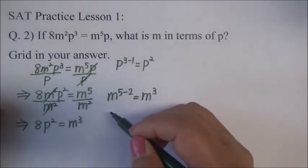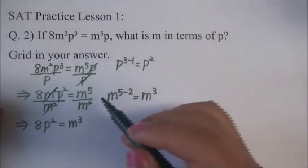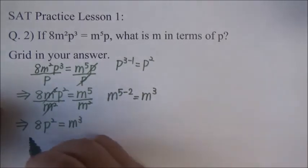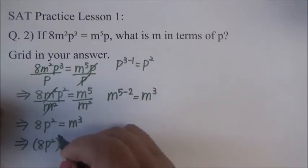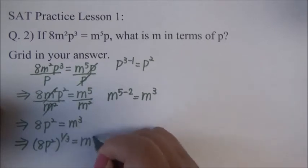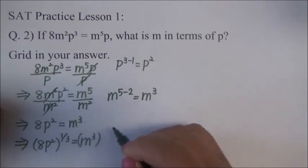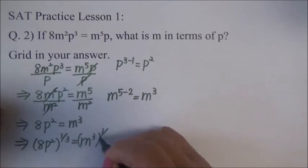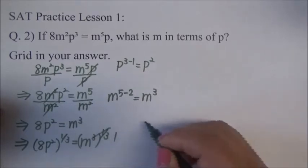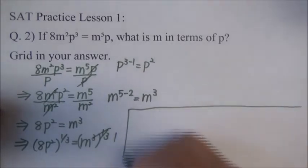So, what do we have to do? We have to multiply each exponent by 1 3rd. So, we have to do 8P squared to the 1 3rd is equal to M cubed to the 1 3rd. And then, 3 times 1 3rd is 1. And then, this is going to be, I'm going to write over here.